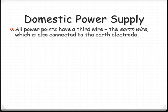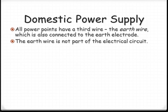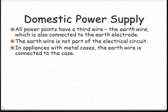Now, all the power points in Australia have an earth wire. This is also connected to an earth electrode. So basically it's not actually part of the circuit. It's attached, the earth wire's attached to the metal case of any appliance that has a metal case.